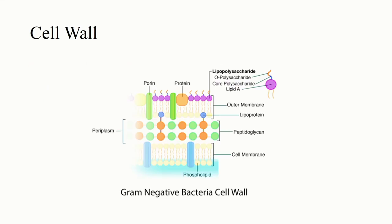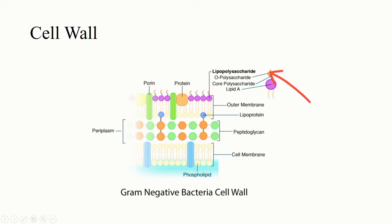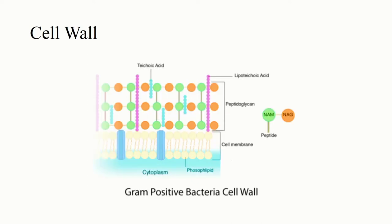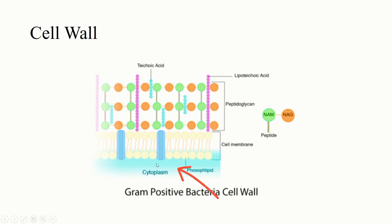Here you can see the cell wall of gram-negative bacteria. The lipopolysaccharide has three structures: O-polysaccharide, core polysaccharide, and lipid A. Lipopolysaccharides are lined on the outer membrane. We also have the porin protein, lipoprotein, peptidoglycan, and the periplasmic space between the outer membrane and the cell membrane. For gram-positive bacteria, the cell wall contains teichoic acids, peptidoglycan, the cell membrane, and cytoplasm.